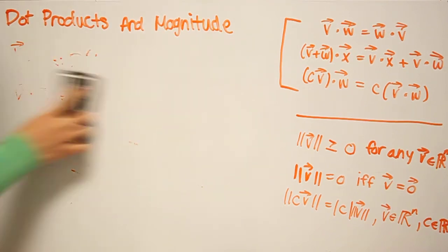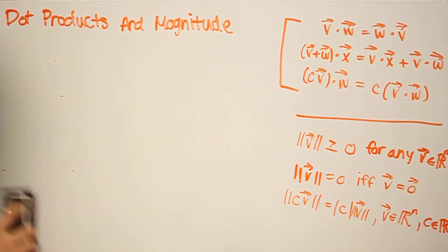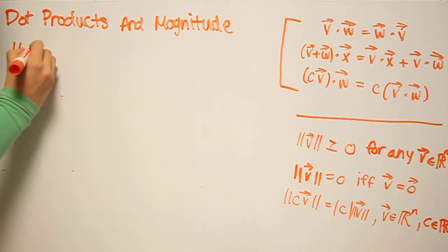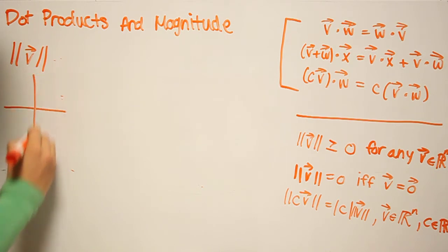Alright, so I'm just going to erase this. So the magnitude of a vector is denoted with these two bars, like this, and this is our plane in R2.